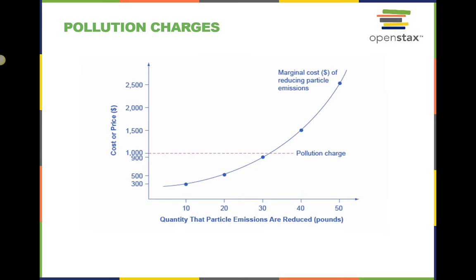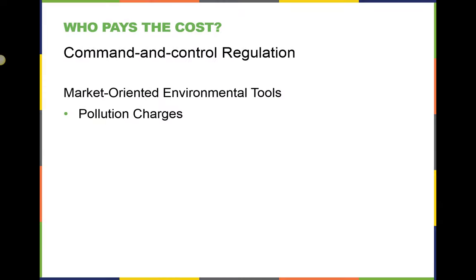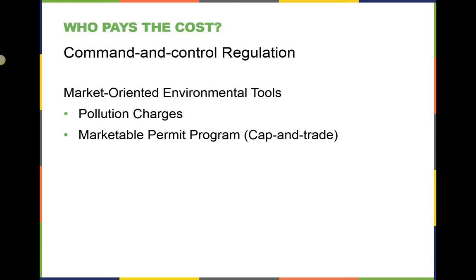Here is an example. This curve represents the marginal cost of reducing pollution by different amounts. If a pollution charge is set equal to $1,000, then the firm will have an incentive to reduce pollution by 30 pounds, because the $900 cost of these reductions would be less than the cost of paying the pollution charge, or tax. The second market-oriented environmental tool is a marketable permit program, also known as a cap-and-trade program. This type of program allows producers willing to pay more to pollute to be able to buy permits, which allows them to pollute. The upside is that those selling the permits will no longer be allowed to pollute, because the pollution level is capped by the number of permits available, and only so many permits exist.